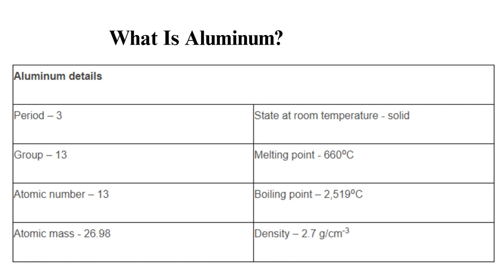Aluminum details: period 3, state at room temperature solid, group 13. Melting point 660 degrees Celsius, atomic number 13. Boiling point 2,519 degrees Celsius, atomic mass 26.98. Density 2.7 grams per centimeter cubic.